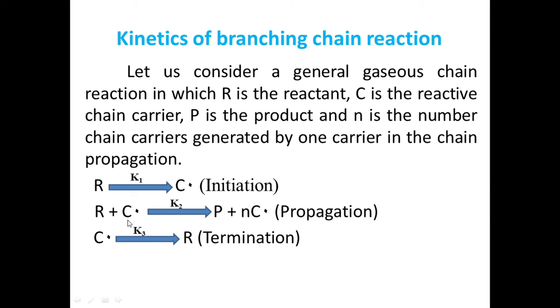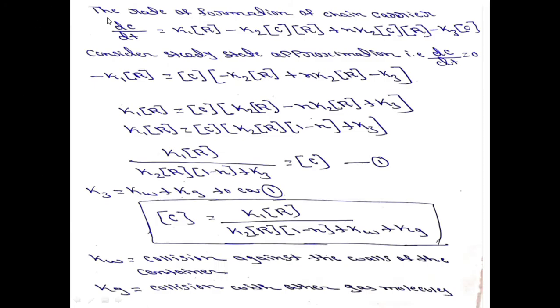The rate of formation of the chain carrier, that is dC/dt, is equal to k1 minus k2·C·R plus N·k2·C·R minus k3·C.